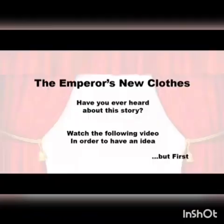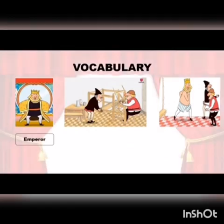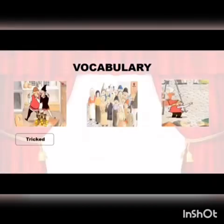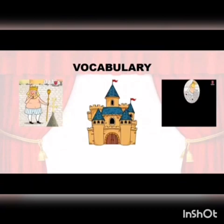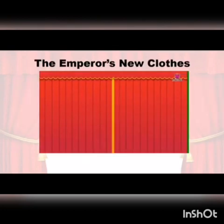Lesson 3. Have you ever heard about the story of the Emperor's New Clothes? Watch the following video in order to have an idea. But first, let's check the vocabulary: emperor, tailors or weavers, invisible clothes, tricked, parade, kid, naked, castle. Now, watch the video to have an idea of this play — the emperor's new clothes.